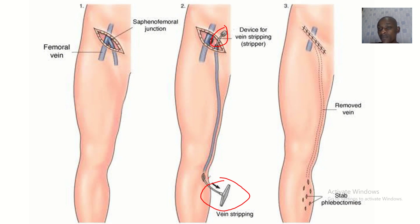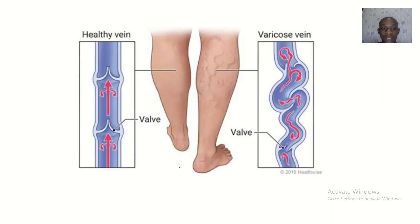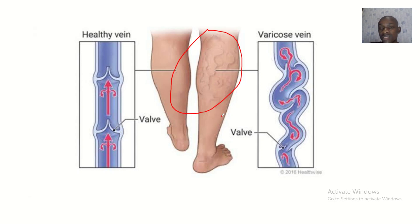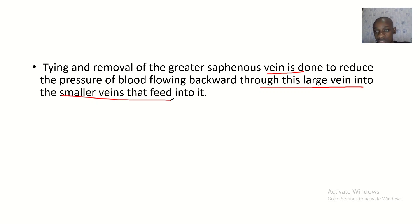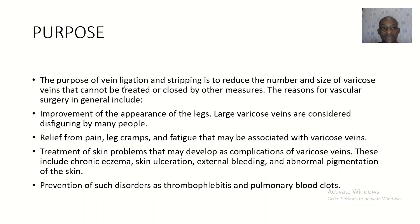This is how the stripping of the great saphenous vein is done. In varicose veins, the vein may have some infections or inflammations, and the best way to treat a gross inflammation may be to remove the source of pain. The tying and removal of the great saphenous vein is done to reduce the pressure of blood flowing back through this large vein into the smaller veins that feed into it.